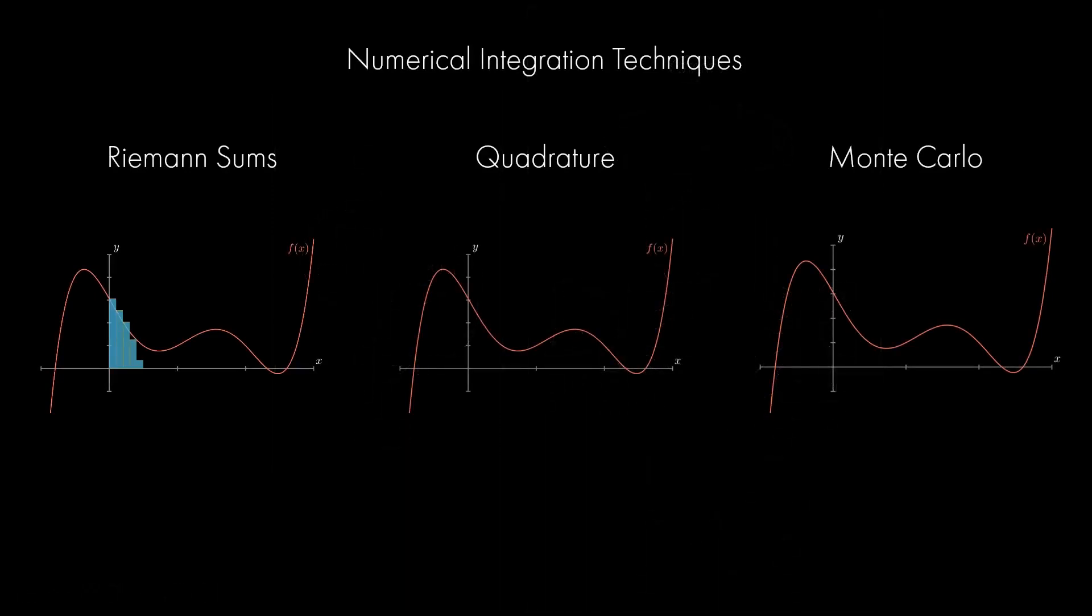Instead, integrals are often approximated numerically through techniques like Riemann sums, quadrature, or Monte Carlo sampling. Still, these sampling-based methods come with a fundamental trade-off between accuracy and runtime based on the number of samples used to approximate the integration.